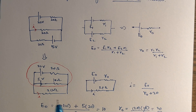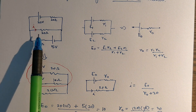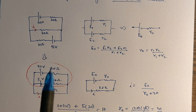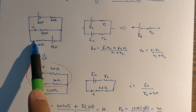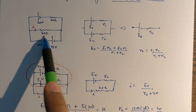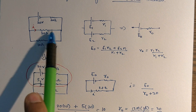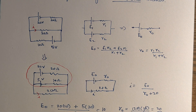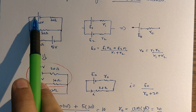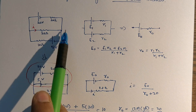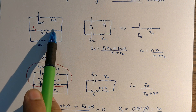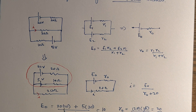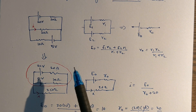Now, if someone asks for the current in a different branch, the procedure changes based on which branch you want. You club the other two branches. Suppose one of those branches has no EMF — in that case, you take a battery of zero EMF and then apply the same result. Similarly, for the third branch, you club the other two, set any missing EMF to zero, and apply the same formula.